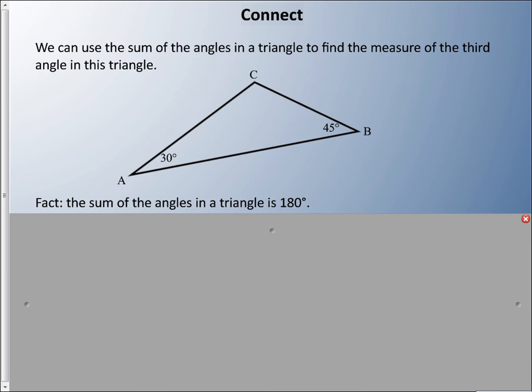So let's just do an example here. And I have this triangle, which I'm going to call the triangle ABC. And I have identified that two angles, angle A is 30 degrees and angle B is 45 degrees. And we're going to try and figure out what is angle C. And we just learned that the sum of all the angles in the triangle is 180 degrees. So in a sense, angle A,